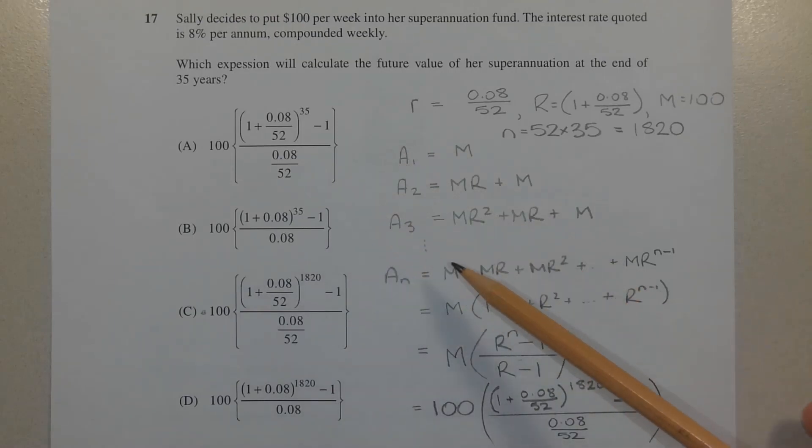Let's model this with a recurrence relation. At the end of the first week, Sally deposits $100 or M. No interest applies because the deposit is made at the end of that week, not the beginning. So A1 equals capital M.